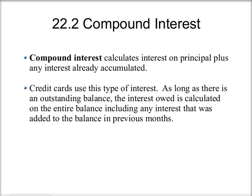In this section, we're going to look at loans with compound interest. Compound interest calculates interest on the principal, or the loan amount, plus any interest that has already accumulated. One example of where you'll see compound interest is in credit cards. As long as there is an outstanding balance, the interest owed is calculated on the entire balance, including any interest that was added to the balance in previous months.